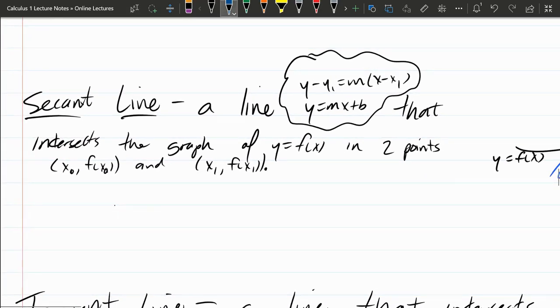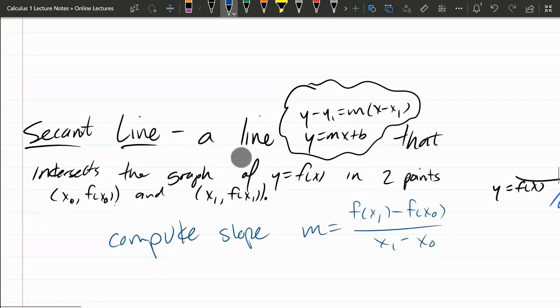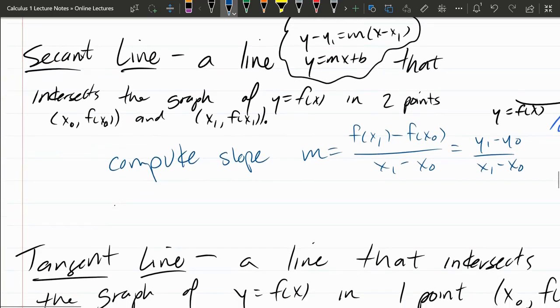What you do need to do on any of these problems, you need to compute the slope. And your slope, you compute it the same way you do average rate of change. It's going to be the two y values subtracted. So it's f(x1) minus f(x0) over x1 minus x0. Again, this is rate of change. If I use the y notation, it's y1 minus y0 over x1 minus x0. It's the regular slope form you've computed for a long time.